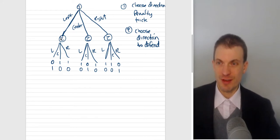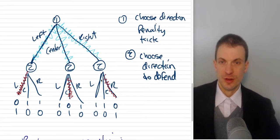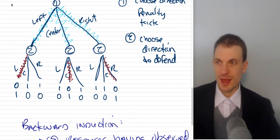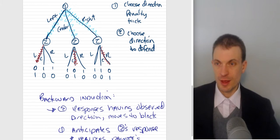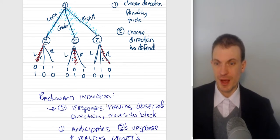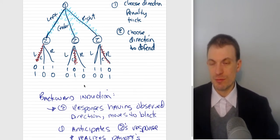If player one chooses left, then player two can respond by left, center, and right. The first payoffs go to player one. The second payoffs go to player two. And we can go ahead and we can solve this by backward induction. So we'll go to the end of the game.